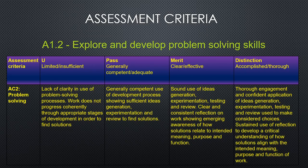For a pass you'll need generally competent use of the development process and sufficient idea generation, experimentation, and review to find solutions — that's what we're doing today. For a merit you'll need sound use of idea generation, experimentation, testing, and review — doing your sketches, developing them, moving them on, showing a clear pathway between your sketch and the next developed process. There should be clear and consistent reflection on work showing emerging awareness of how solutions relate to intended meaning, purpose, and function.